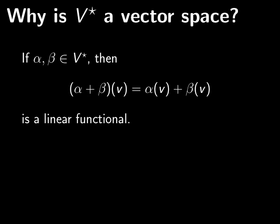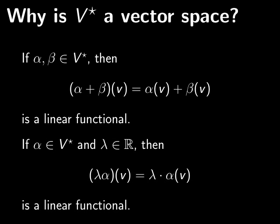We need to check that V star is actually a vector space. The first thing to check is that if you've got two linear functionals alpha and beta in V star, then their sum alpha plus beta is again a linear functional. We also need to check scalar multiplication: if we've got a linear functional alpha in V star and a scalar lambda, then lambda alpha is again a linear functional.